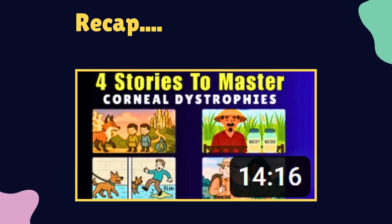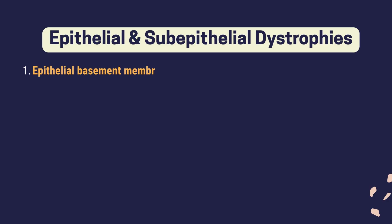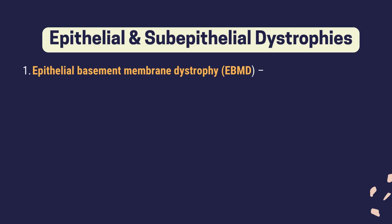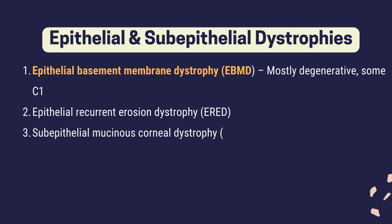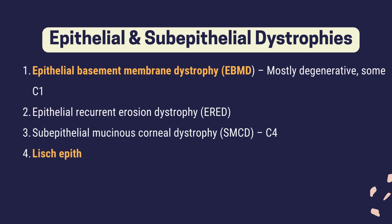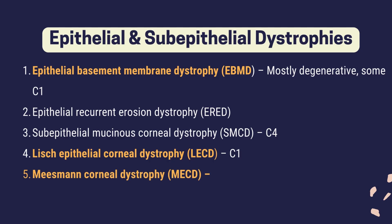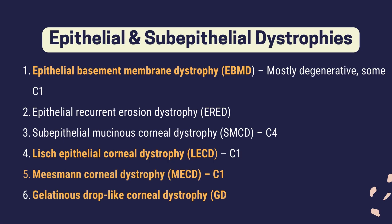In our previous video, we introduced epithelial and subepithelial corneal dystrophies and their classification. These dystrophies are grouped based on morphology and genetic evidence. Within this category, there are six types but today we will be focusing on the four that are most clinically important.